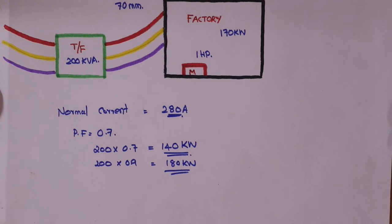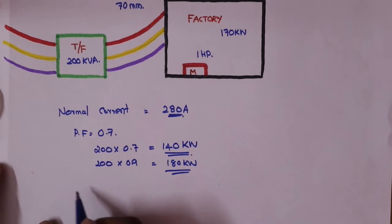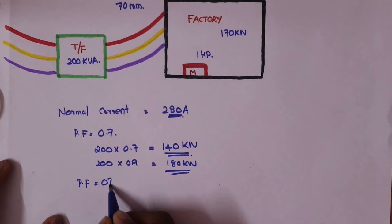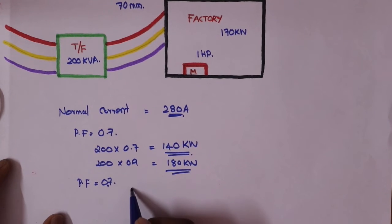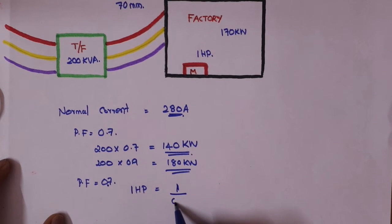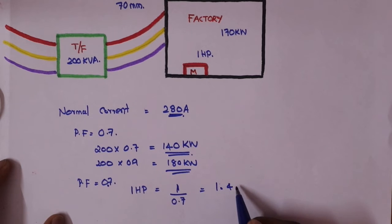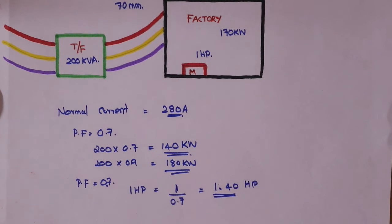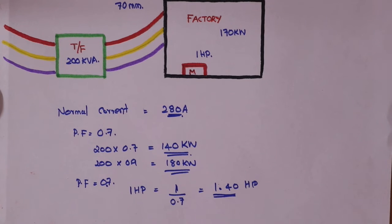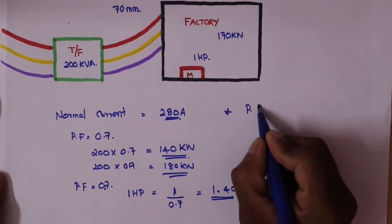I have a one HP motor — one HP motor with 750 W. Power factor is 0.7. So, 1 divided by 0.7 which is equal to 1.40. In my one HP motor with 0.7 power factor, 1.4 HP power is required. So you see — a one HP motor with poor power factor behaves like a two HP motor in terms of energy used.